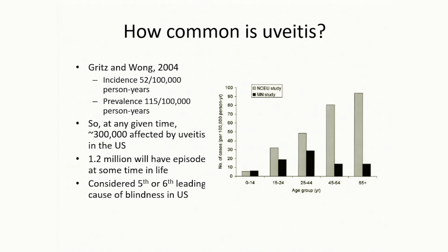Uveitis is not that uncommon. The incidence is about 50 per 100,000, and the prevalence is about 100 per 100,000. So at any given time there are about 300,000 people in the US who have active uveitis, meaning about 1.2 million people in this country alive today will have this at some point in their life. It can be blinding, and depending on which list you read, it's either the fifth or sixth leading cause of blindness in the US.